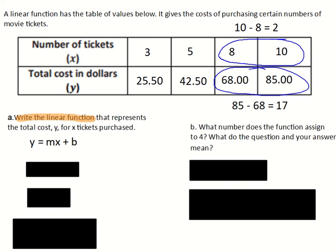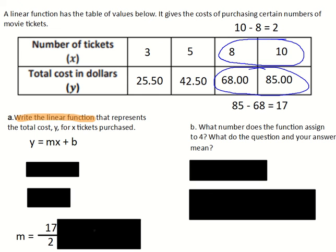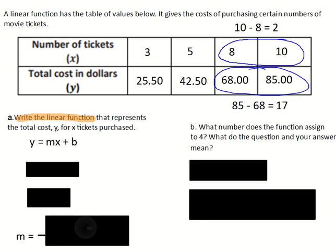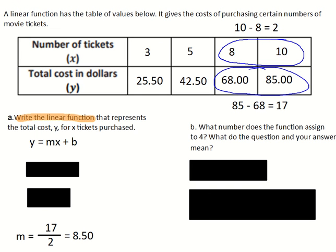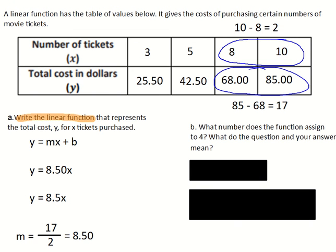So I'm going to find my slope, which is my change in y over my change in x. So I have 17 over 2, which is 8.50. So I'm going to plug that in for the slope, the m. So y equals 8.50x. I don't have to show that 0 at the end, so I'm going to write it as y equals 8.5x. That is my equation.